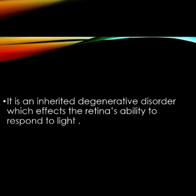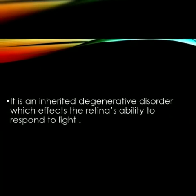First of all, what is Retinitis Pigmentosa? It is a hereditary disorder affecting rods more than cones, leading to dystrophy of rods and cones. Rods and cones are two types of photoreceptor cells. Rods are responsible for nighttime vision, located in the outer part of the retina. Cones are responsible for daytime vision, located in the central part of the retina. Basically, RP is an inherited degenerative disorder which affects the retina's ability to respond to light, resulting in progressive loss of vision, eventually leading to blindness.